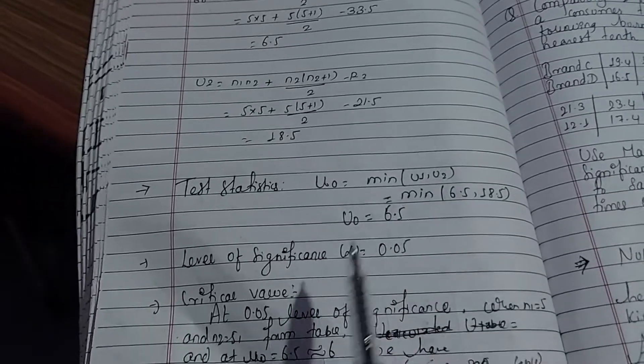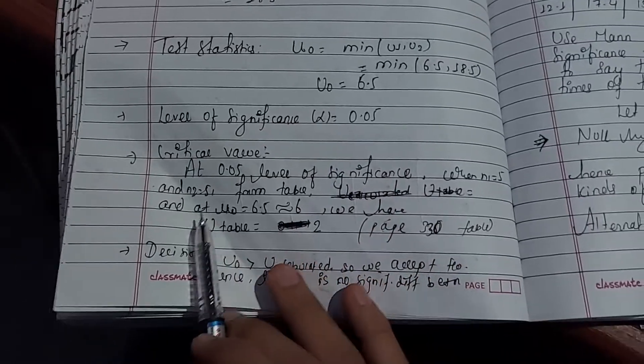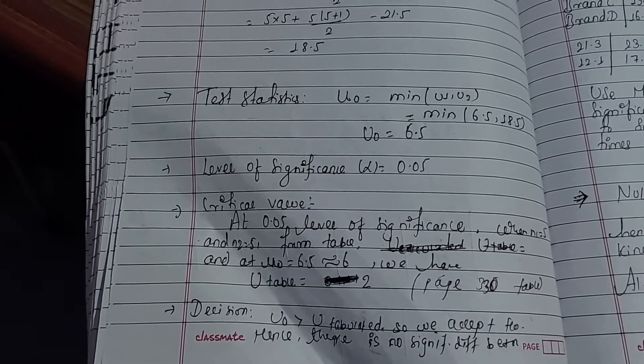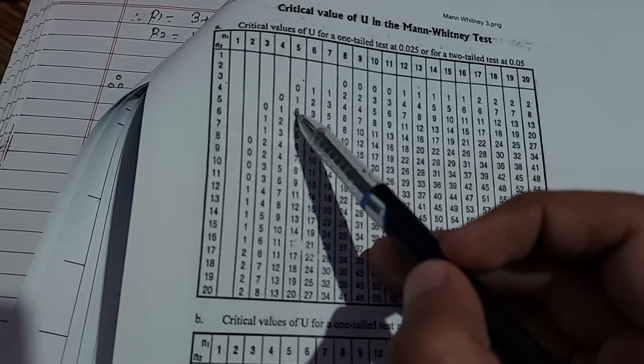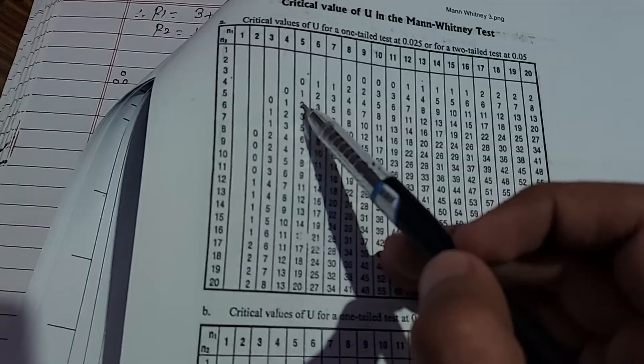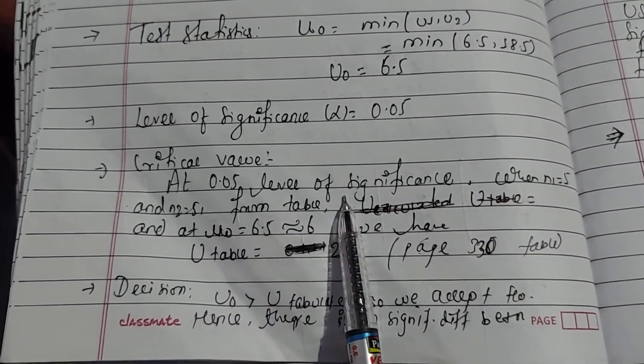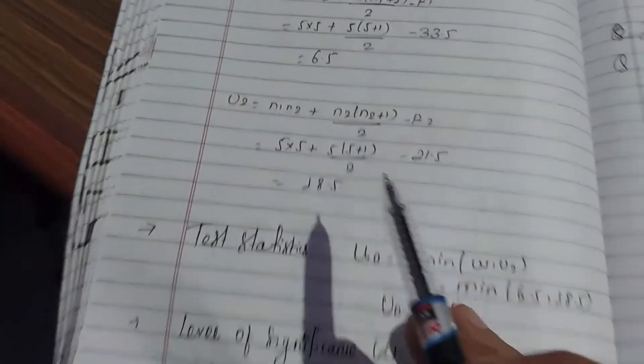Looking up the critical value in the Mann-Whitney table: For n1=5, n2=5, and alpha=0.05 for a one-tailed test, the critical value from the table is 2. This is our tabulated value that we'll use for comparison.